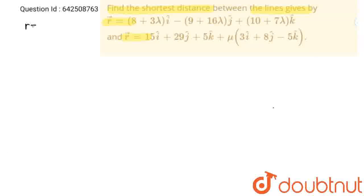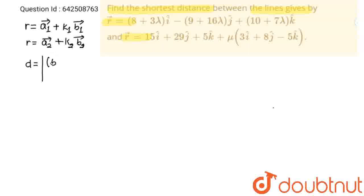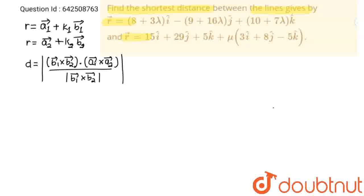Suppose we have two lines. The first line is a1 vector plus k1 times b1 vector, and the second line is a2 vector plus k2 times b2 vector. So the shortest distance between these two lines, d, is given by: (b1 vector cross b2 vector) dot (a2 vector minus a1 vector), upon the modulus of b1 vector cross b2 vector. We need to find the cross product vector, then the dot product, and divide by the magnitude.